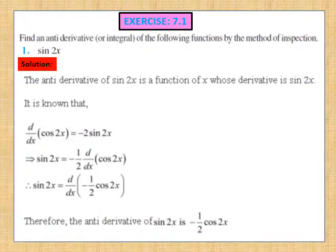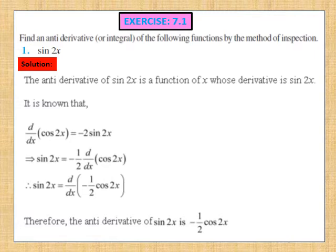Let's begin with Exercise 7.1. Question: find the anti-derivative of sin 2x by the method of inspection. We know differentiation of cos 2x gives -2 sin 2x, but we need only sin 2x. So sin 2x equals -½ · d/dx of cos 2x. Therefore, the anti-derivative or integral of sin 2x is -½ cos 2x. Pause and note down the solution.